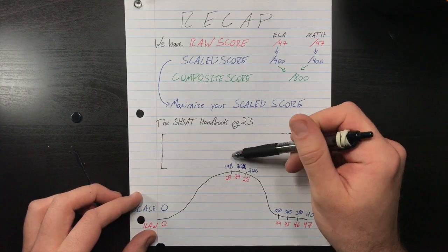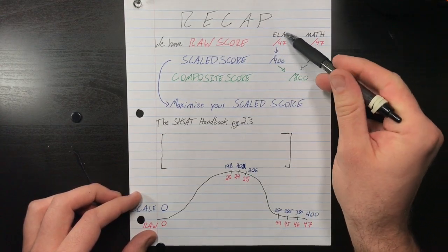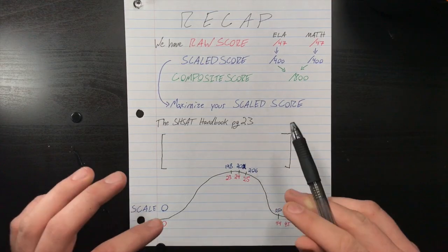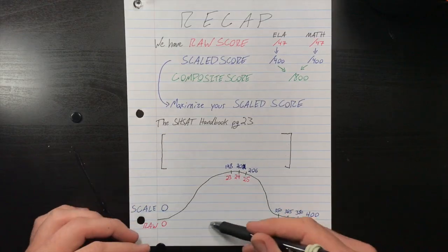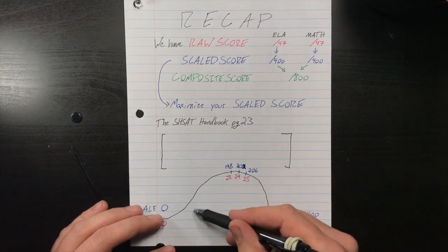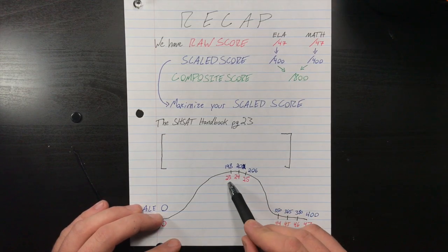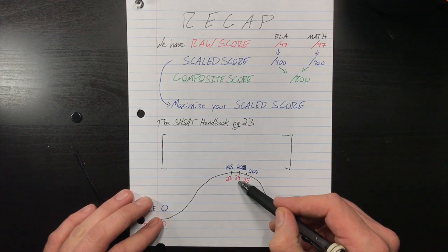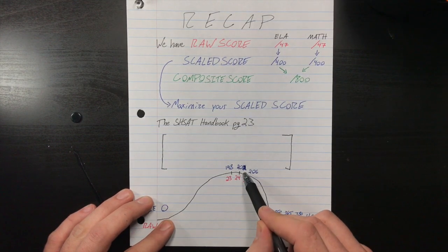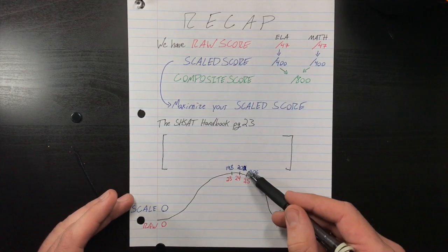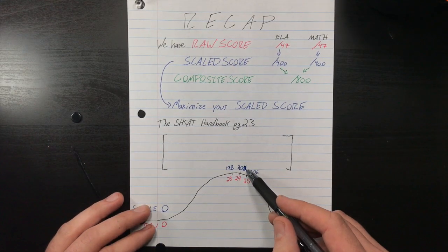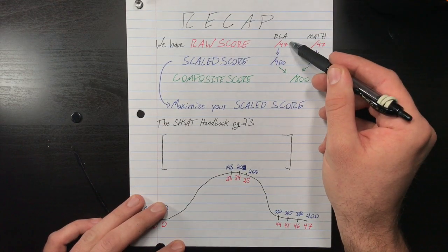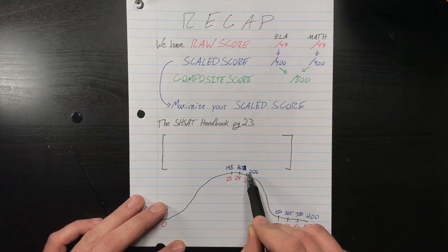Let's talk about in the middle of the pack here, you're getting 23, 24, 25 correct out of 47. Remember this is a hard test, most kids are going to be in this area, fingers crossed that's what the city wants. They want to make a nice bell curve. If you get 23 correct you might walk away with a math score of 198. If you get 24 correct you might walk away with a 202, and if you get 25 correct you might get a 206. Notice that it's a difference of four and a difference of four, four scaled points.